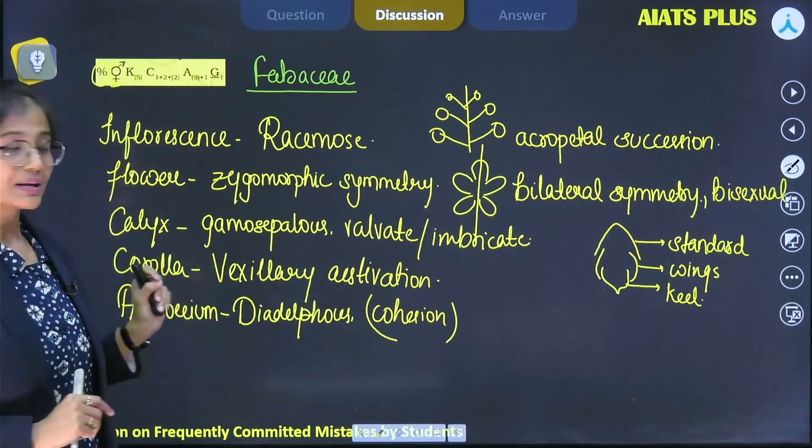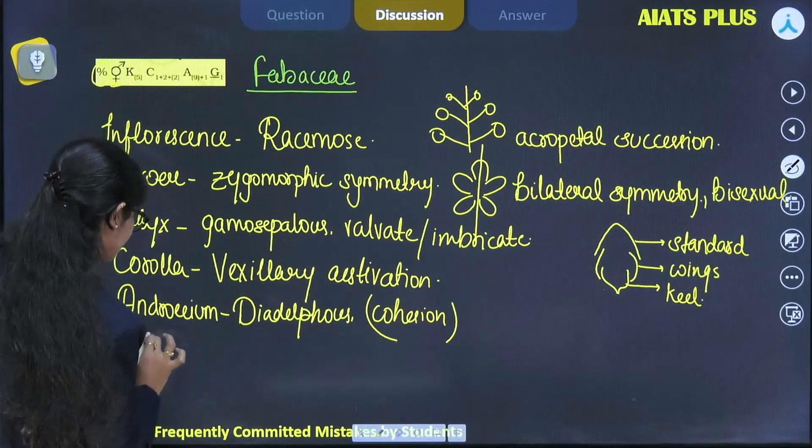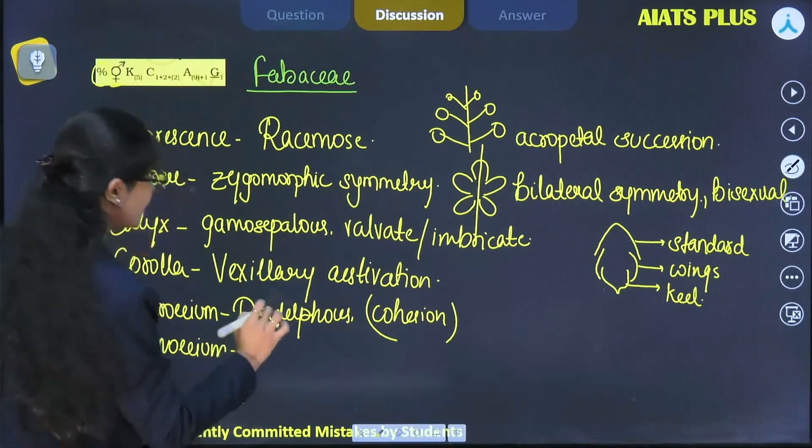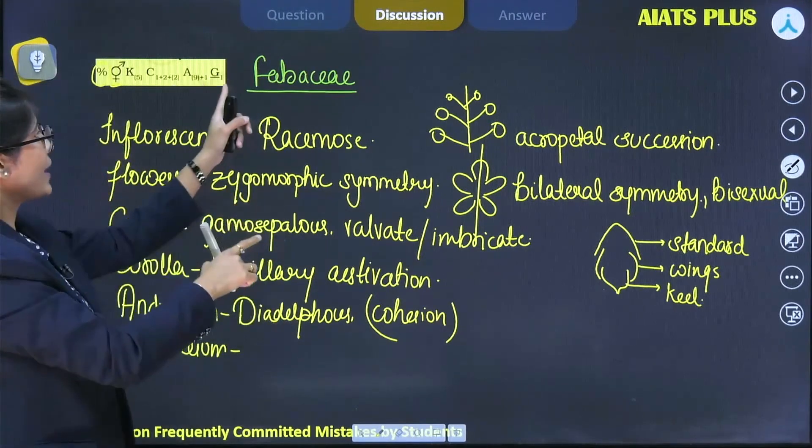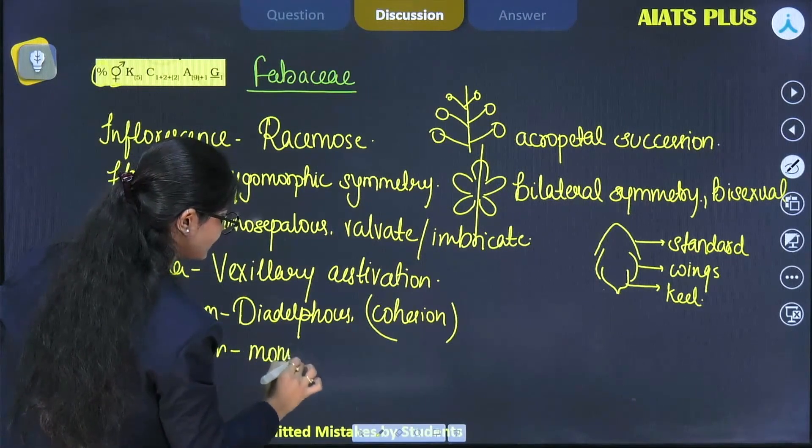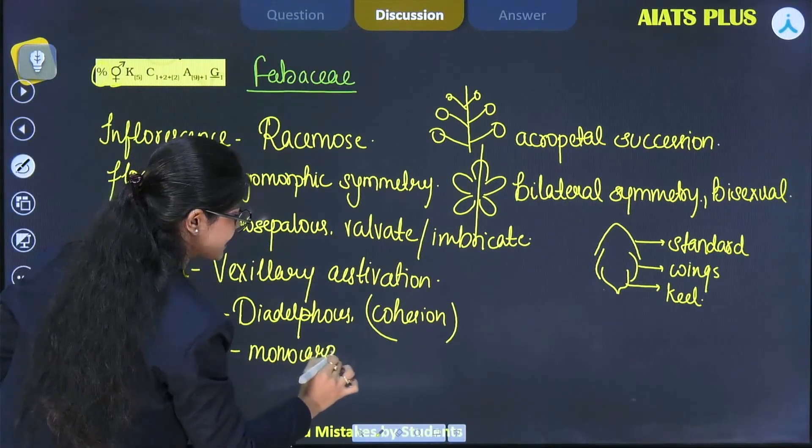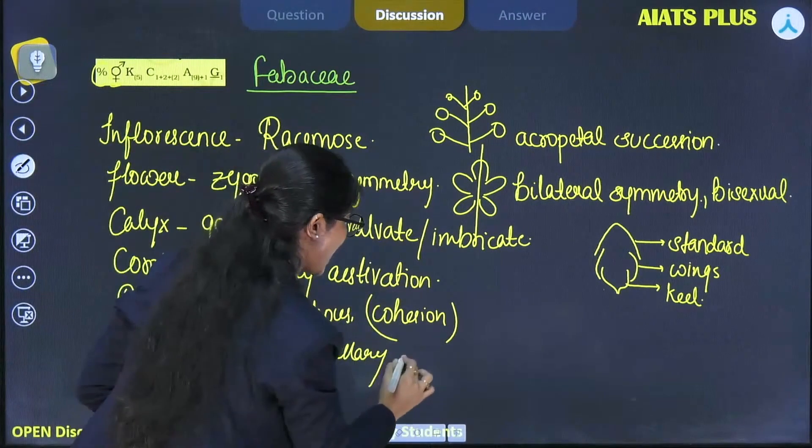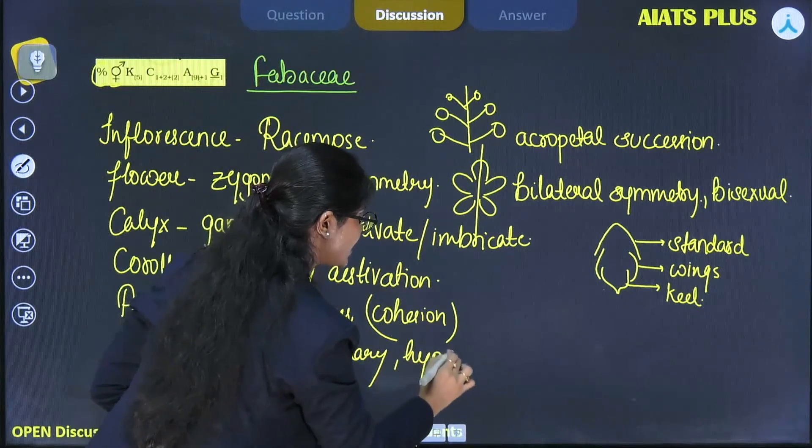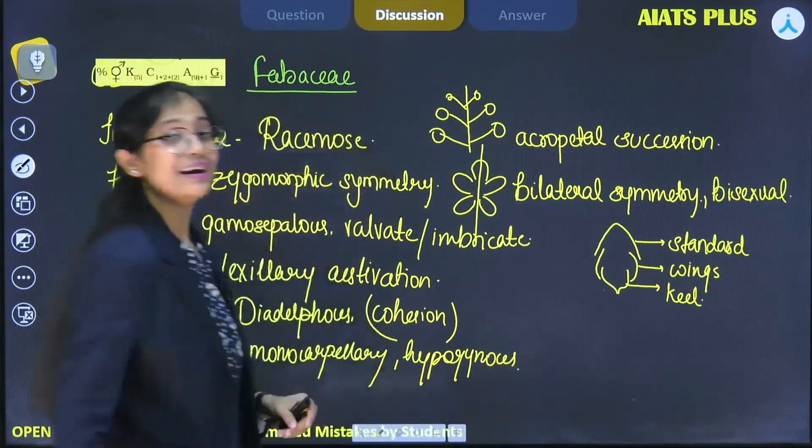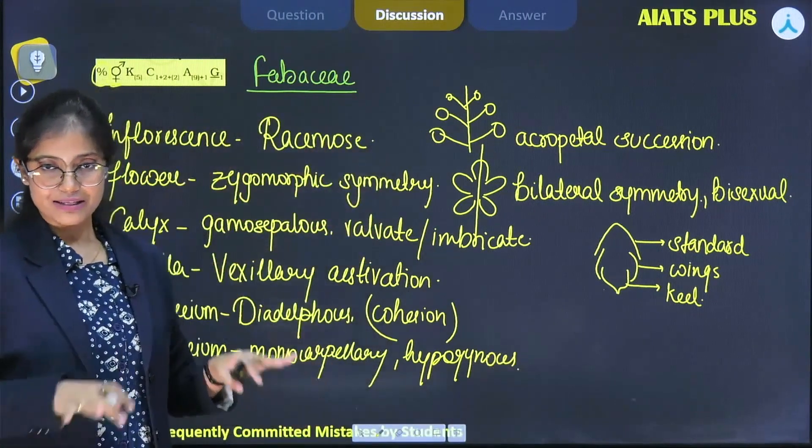Now let's see the gynoecium structure, the female reproductive organ. It is monocarpellary, as one denotes only a single carpel. The bar given under the G means the flower is hypogynous, meaning it has a superior ovary and all the other floral organs are below it.